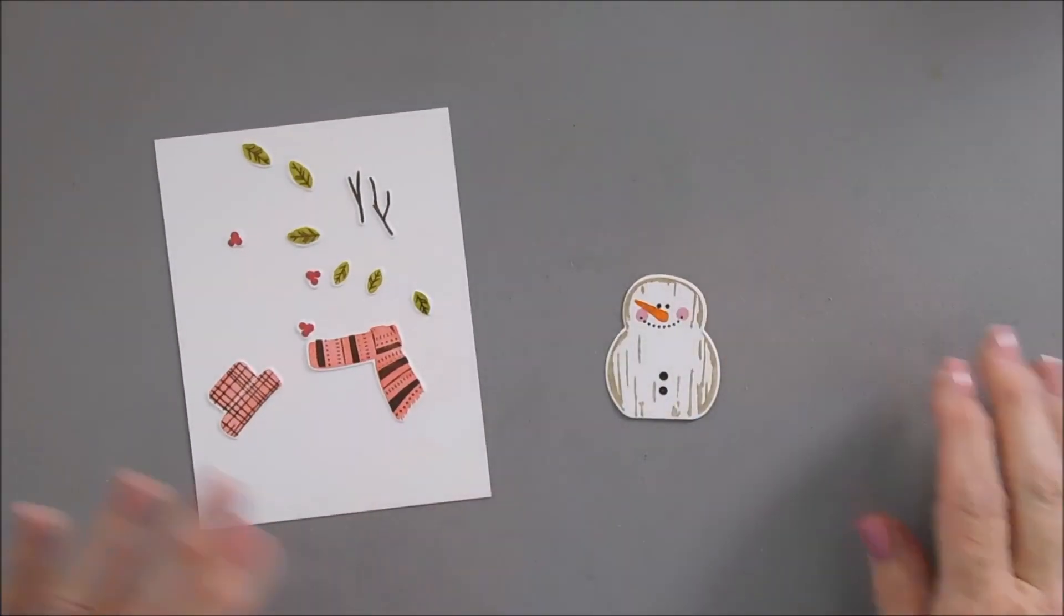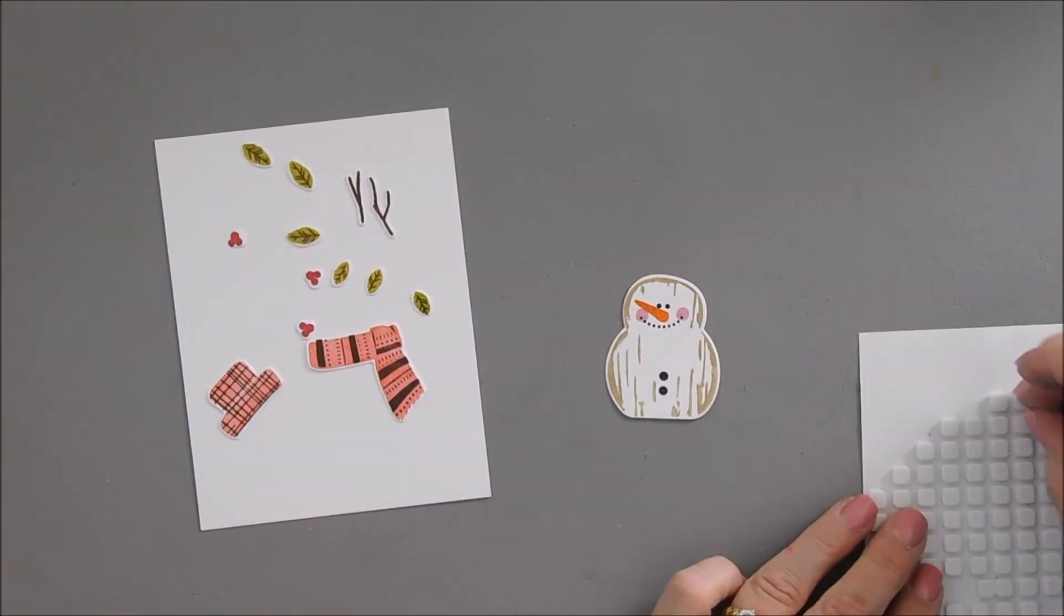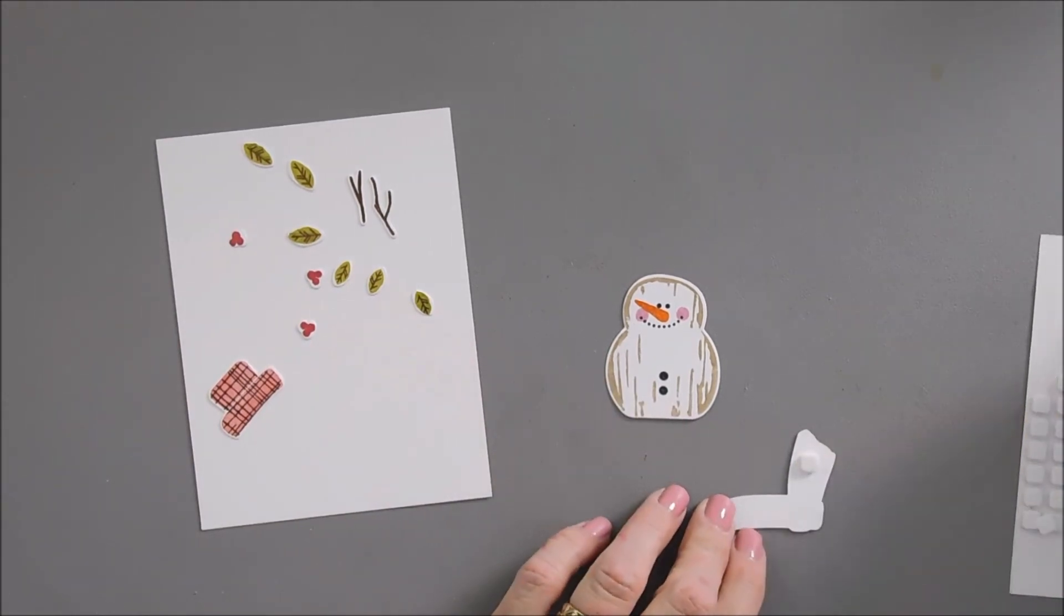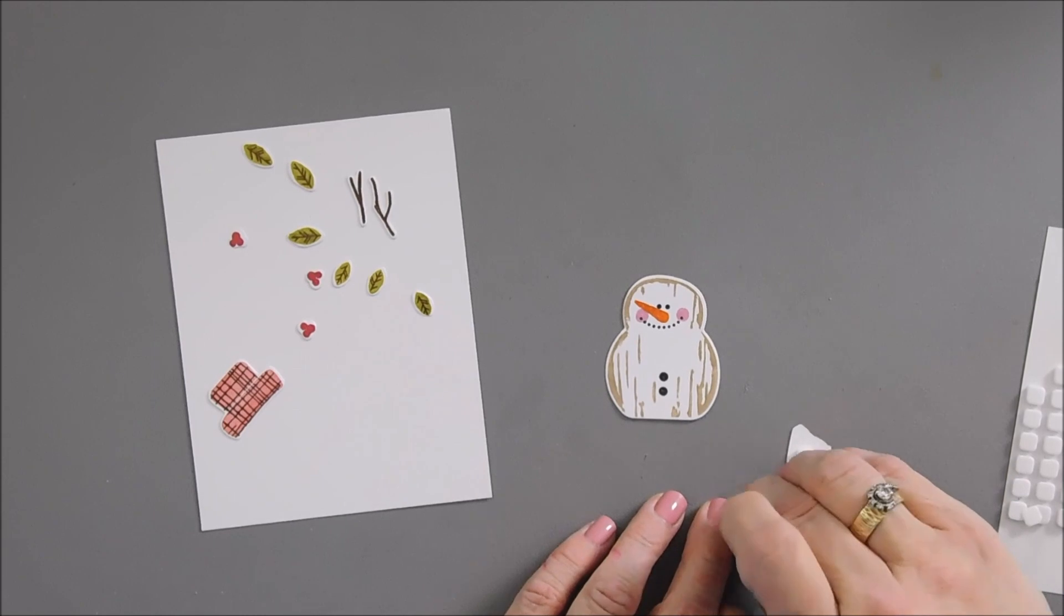Now we get to build a snowman and I think this is the fun part. We are going to go ahead and take our scarf. I'm going to use some small foam squares and we're going to layer our scarf on our snowman.